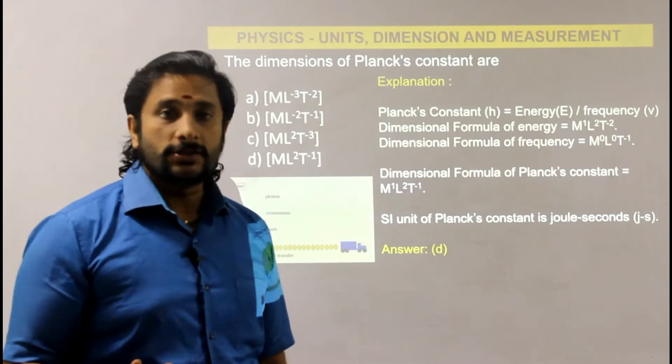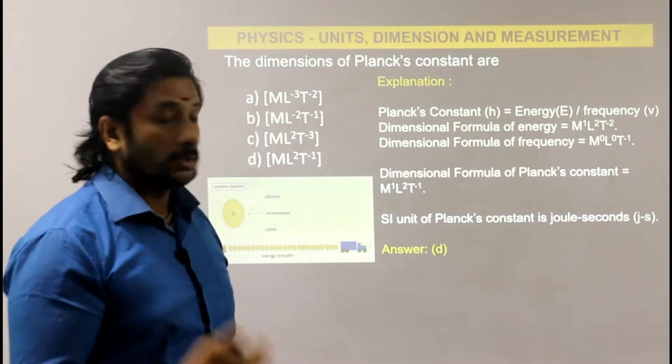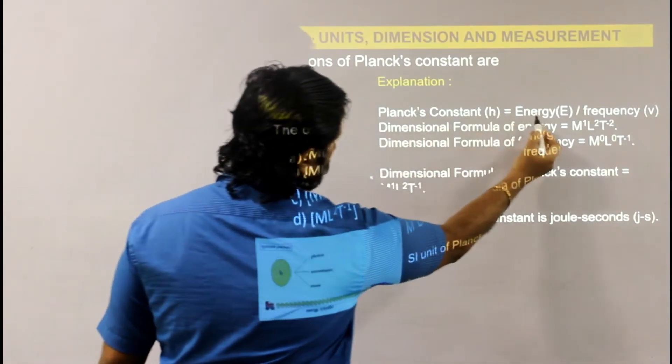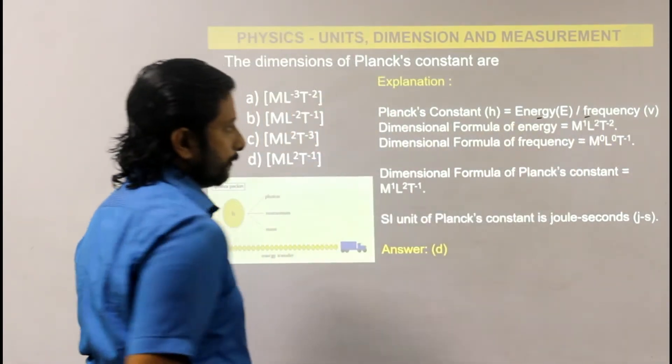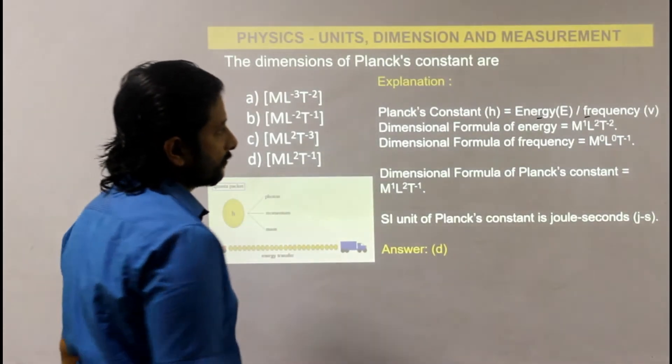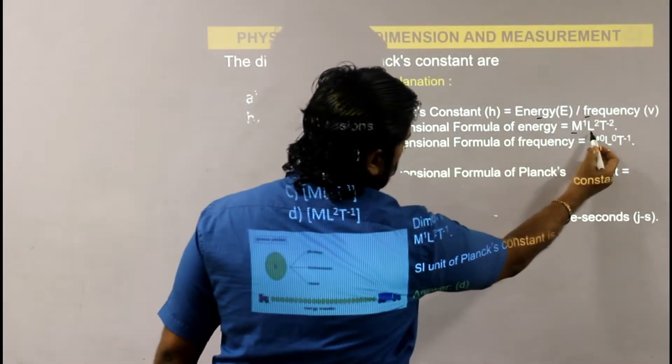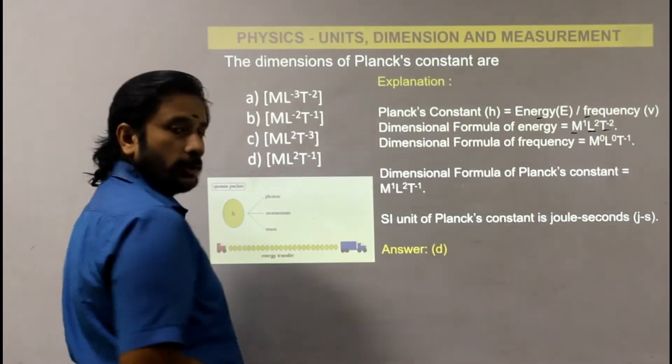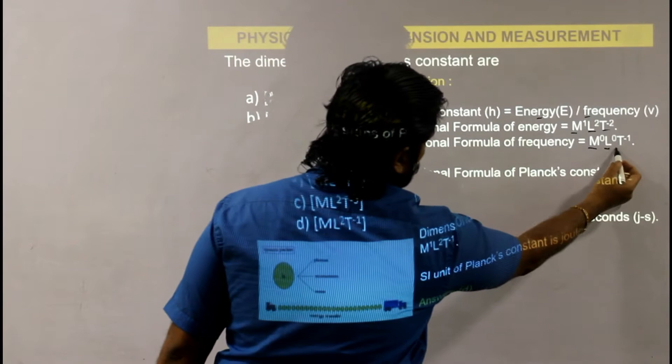Energy and light - every energy is related to frequency via Planck's constant. Planck's constant is equal to energy divided by frequency. So energy's dimensional formula is M¹L²T⁻². Frequency's dimensional formula is M⁰L⁰T⁻¹.